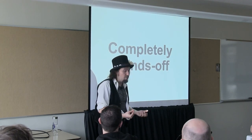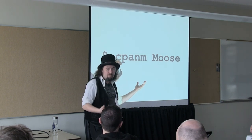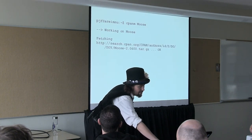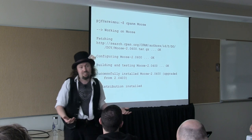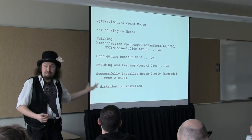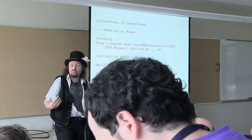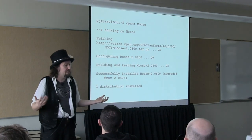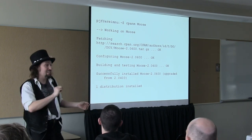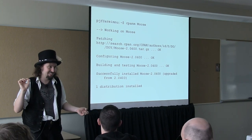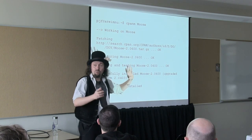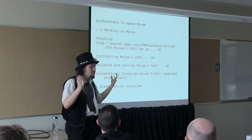The great thing about cpanm is it's completely hands-off. If I want to install a module — say Moose — I just say give me Moose, and it says okay, I'm downloading it, configuring it, building it, and I'm done. You don't get pages and pages of output you don't care about. If there are dependencies, it downloads and installs those for you. If you want to install it for everyone, it's cpanm --sudo Moose, which fires up sudo and away you go. You can install pretty much everything from the CPAN using cpanm.